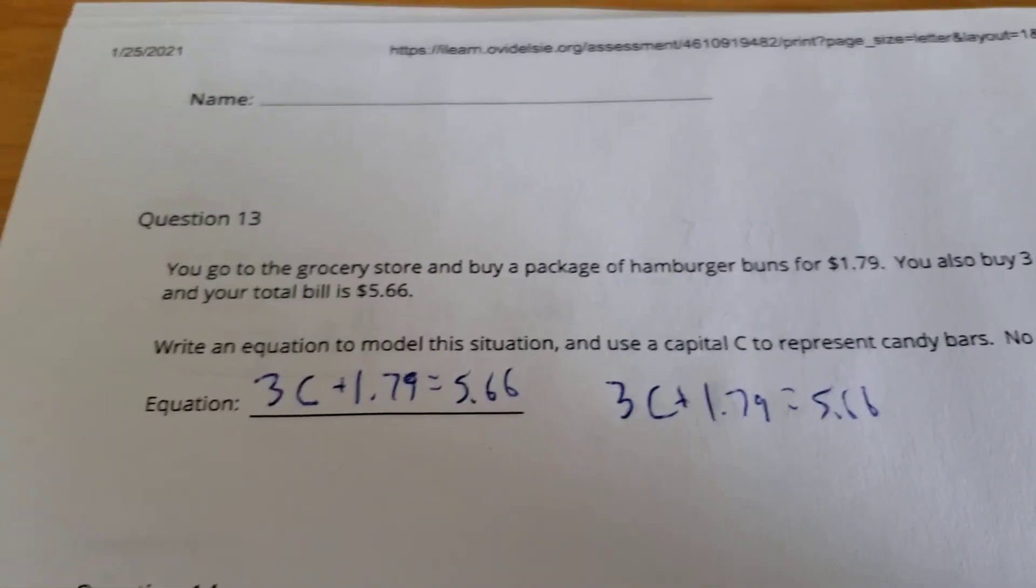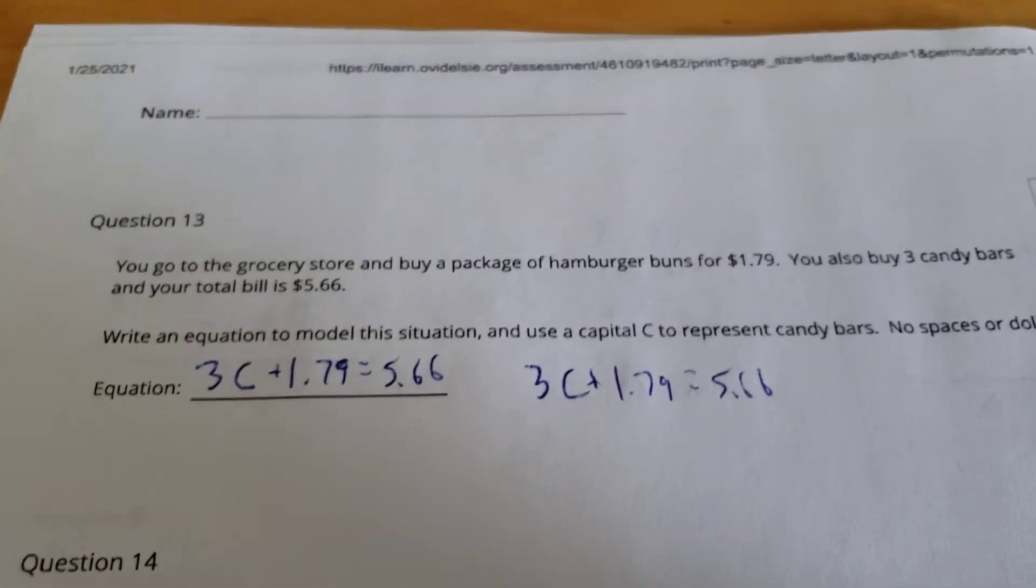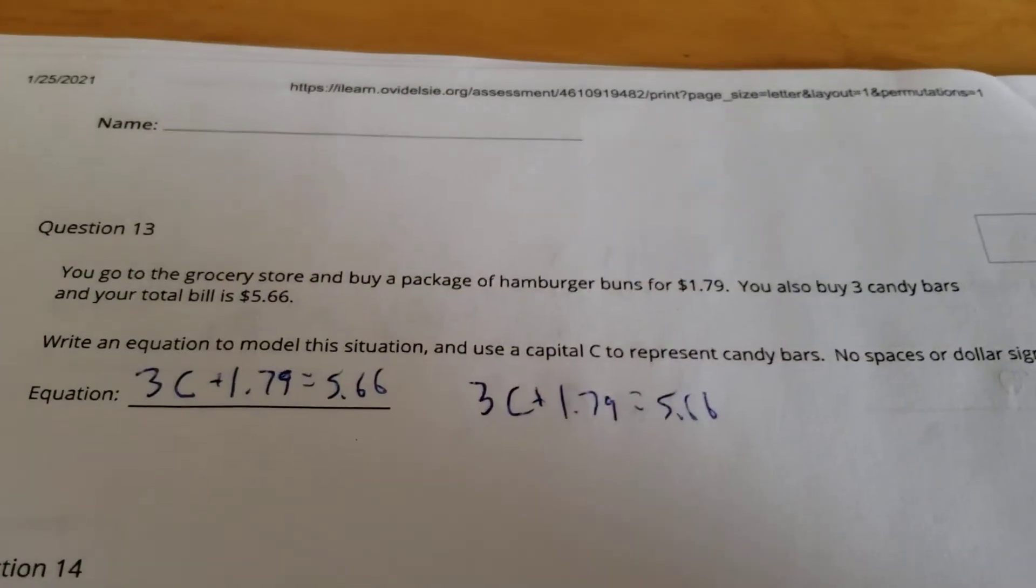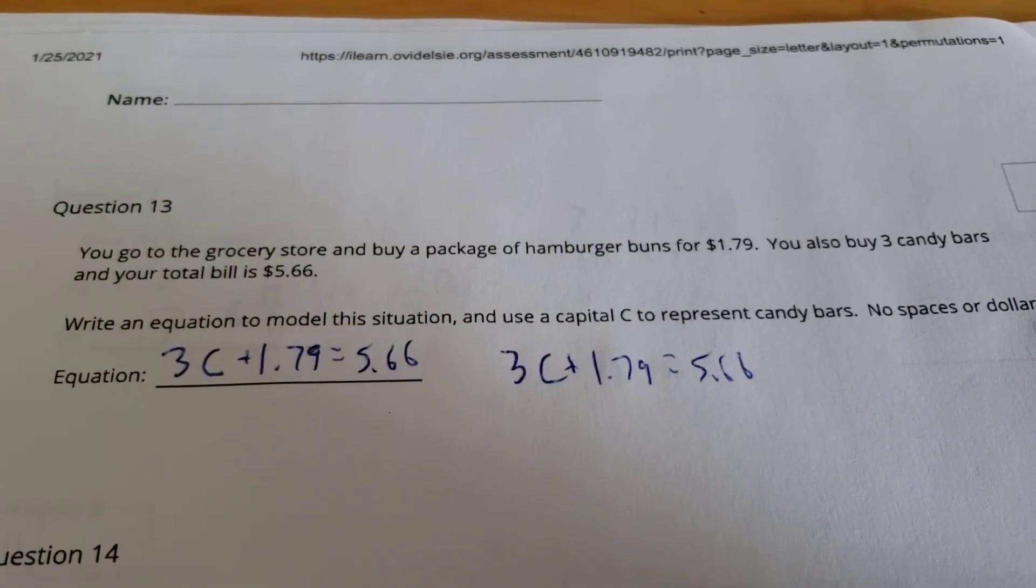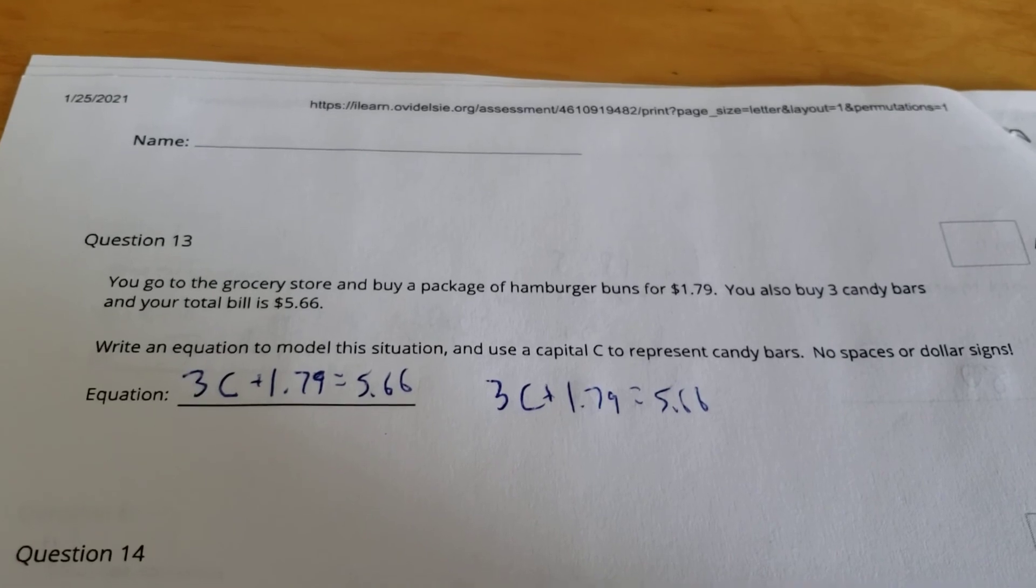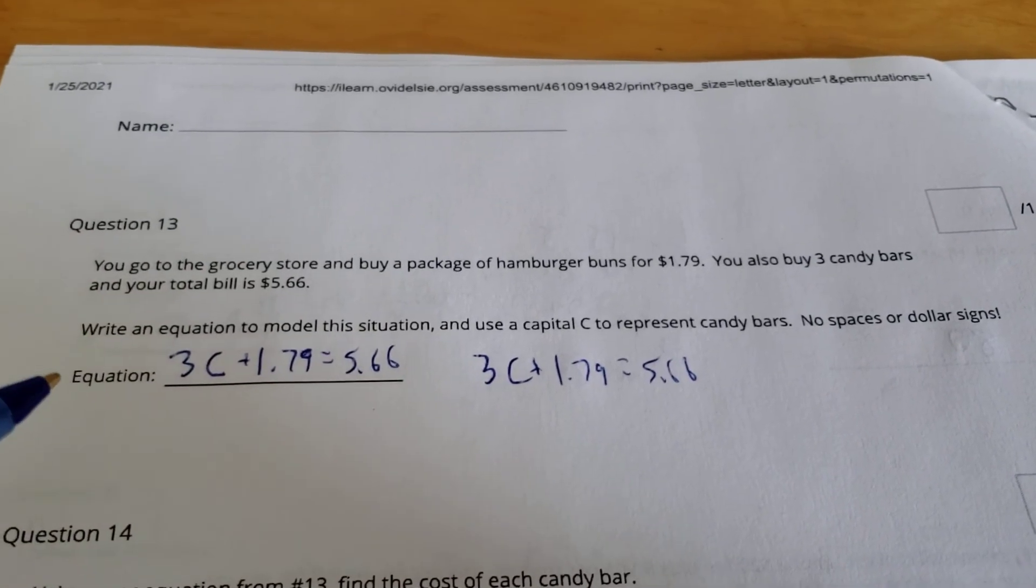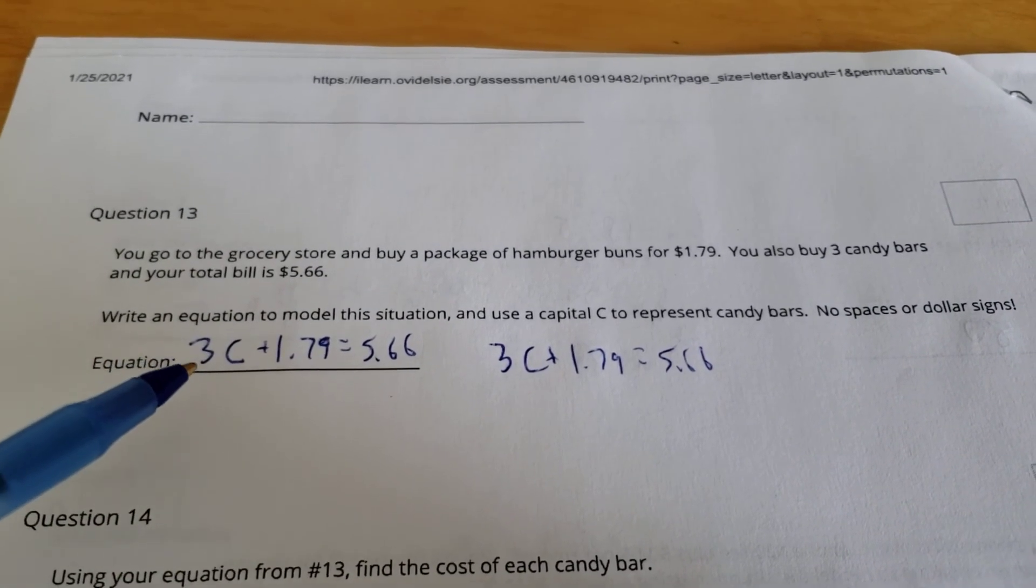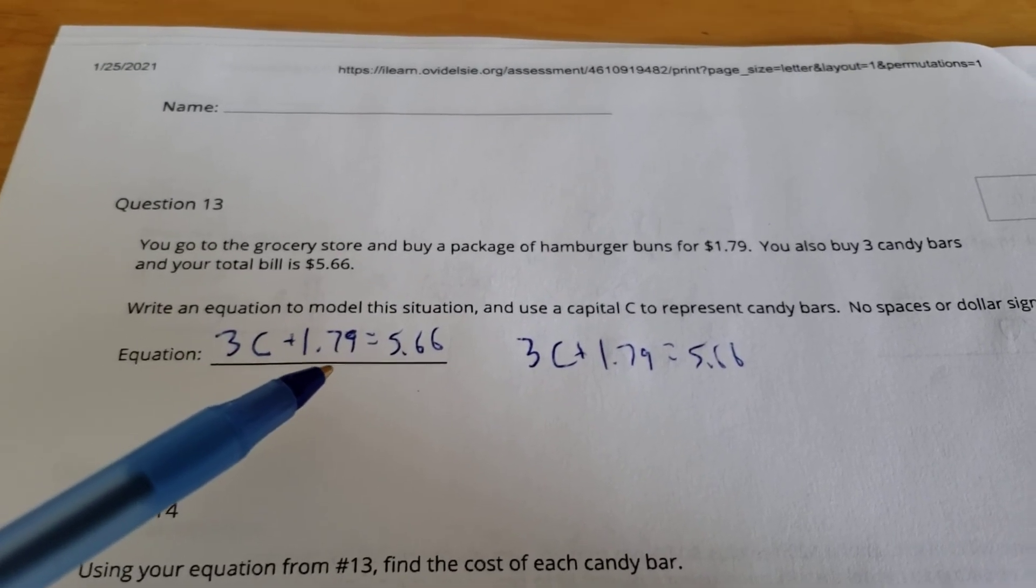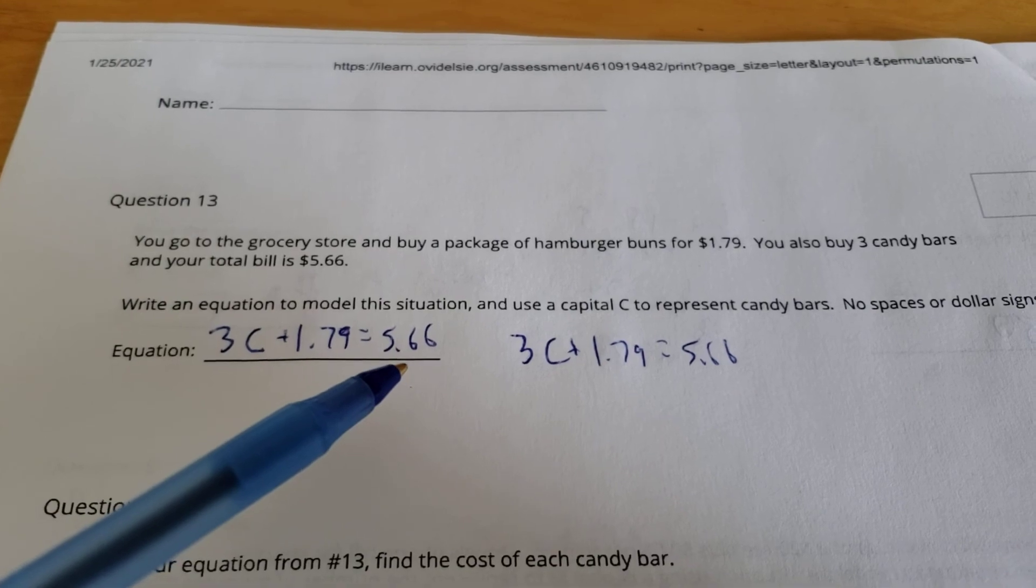Number 13. You go to the grocery store and buy a package of hamburger buns for $1.79. You also buy three candy bars, and your total bill is $5.66. Write an equation to model this situation. Use a capital C to represent candy bars. Remember, no spaces or dollar signs. So we've got three candy bars, so I'm going to use three of those. So 3 times C, 3C, plus the $1.79 you spent on hamburger buns. That's where you get your total of $5.66 from.